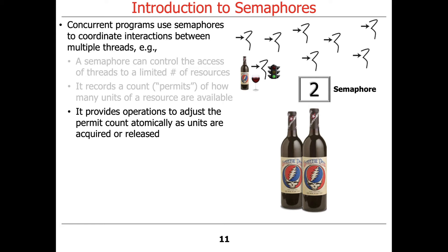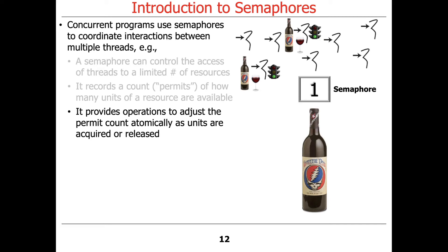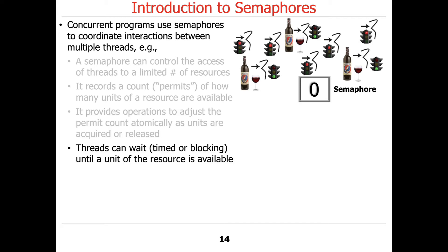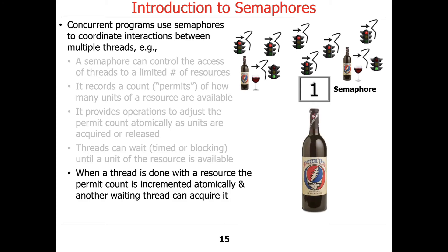So let's say somebody wants to drink a glass of wine — they have to acquire a bottle. As long as the semaphore count is greater than zero, you can get one of the bottles. Another person wants to drink another glass, so they get another bottle. Finally, all three bottles are being used. When the value of the semaphore is zero, anybody else who wants to acquire the resource is unable to do so because the count is zero — everything is in use. When a thread is done with a resource, the permit count is incremented atomically, and another waiting thread can acquire it. When someone's done drinking, they give back the bottle and the count atomically goes back to one.